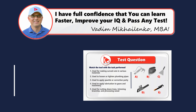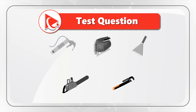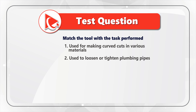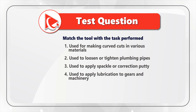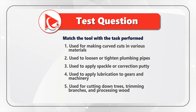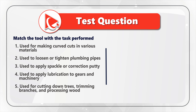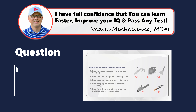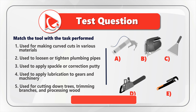Here's an amazing question to see how well you know the tools. You are presented with five tools and you need to match the tool with the task performed. Choice one: used for making curved cuts in various materials. Choice two: used to loosen or tighten plumbing pipes. Choice three: used to apply spackle or correction putty. Choice four: used to apply lubrication to gears and machinery. Choice five: used for cutting down trees, trimming branches, and processing wood. Match these descriptions with choices A, B, C, D, and E.